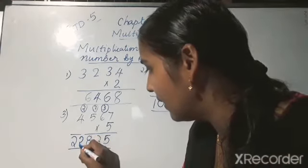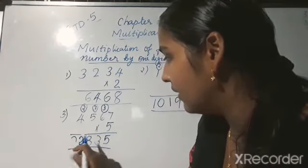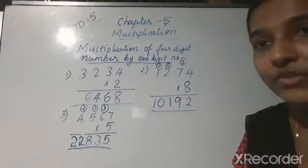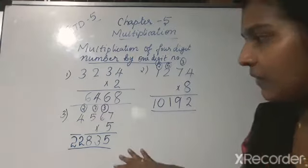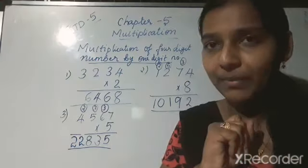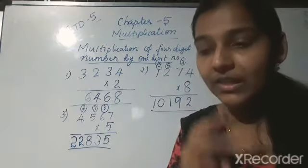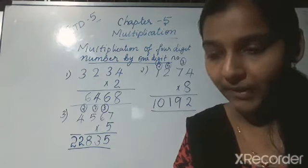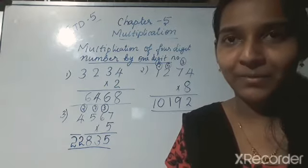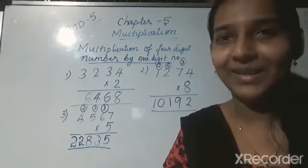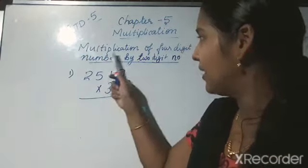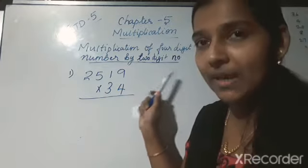22,835 is the product of these two numbers. This way you can multiply a 4-digit number by a 1-digit number. There are 3 more questions in your textbook on page number 51 — everyone answer those also in your maths notebook. Now we are moving to the next topic: multiplication of a 4-digit number by a 2-digit number.